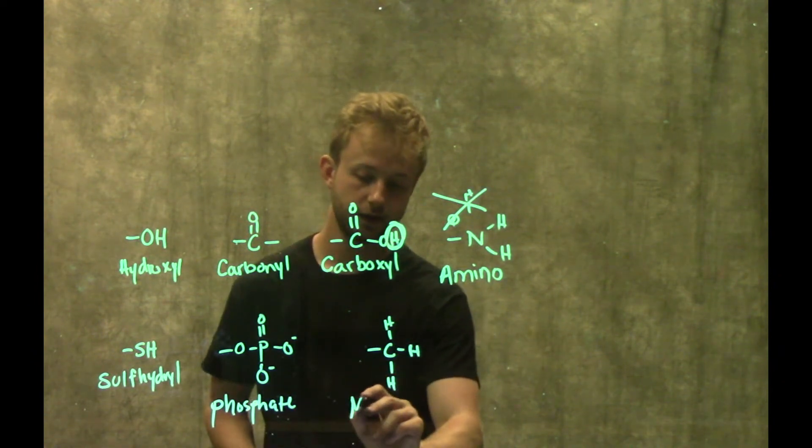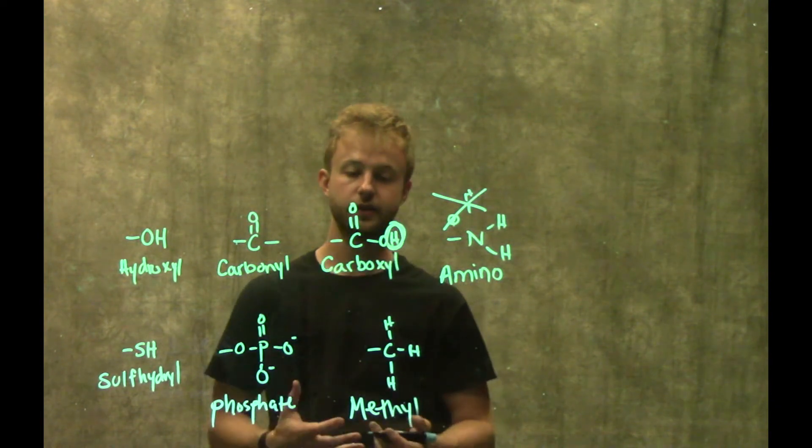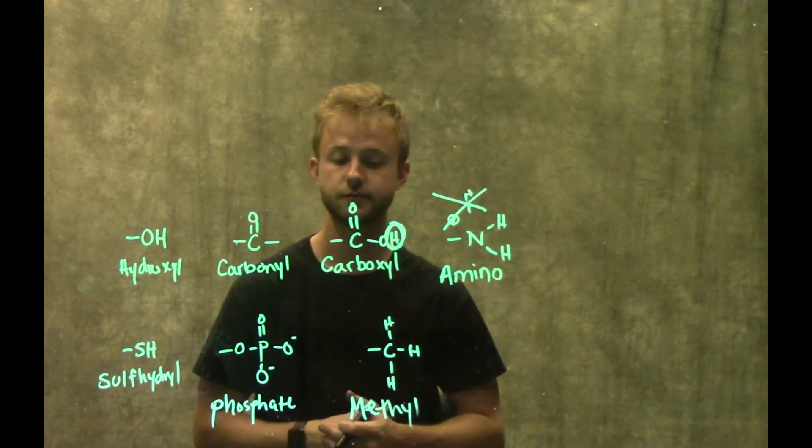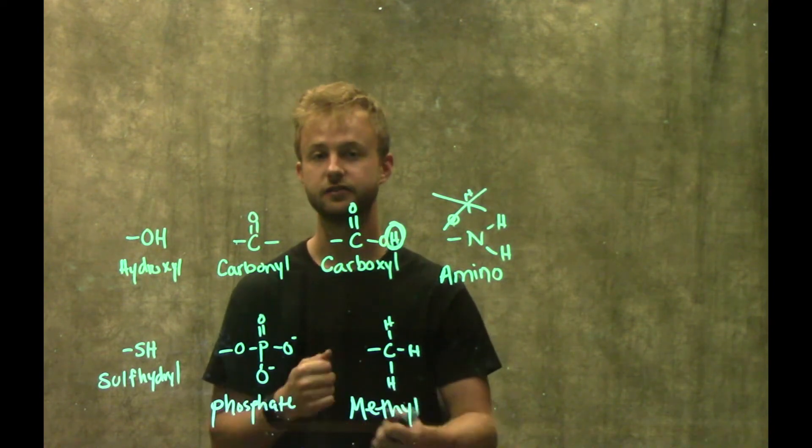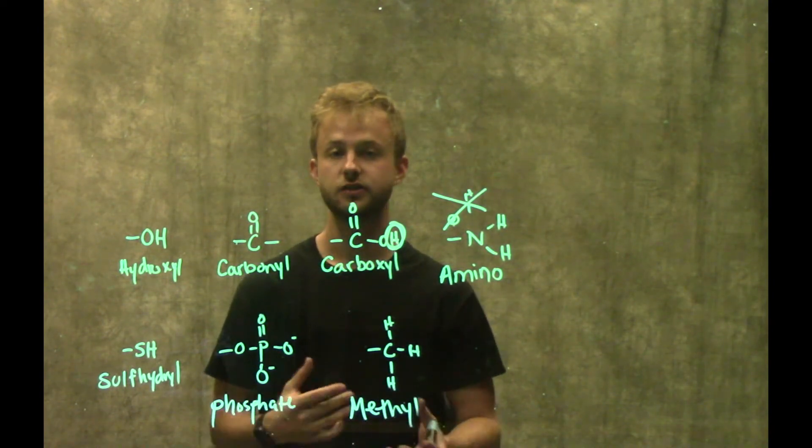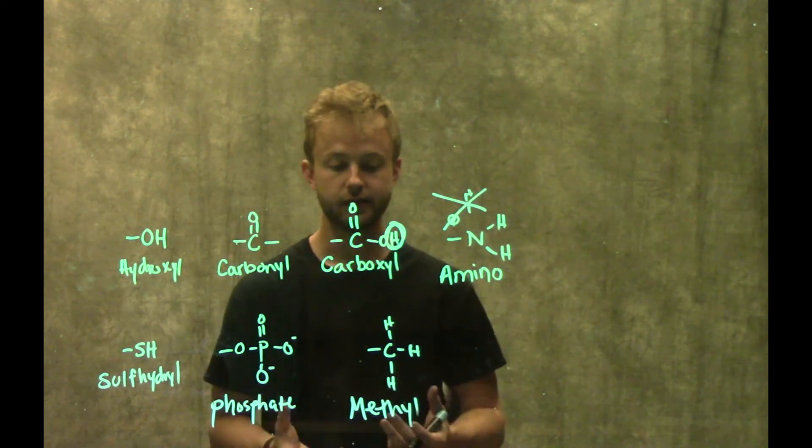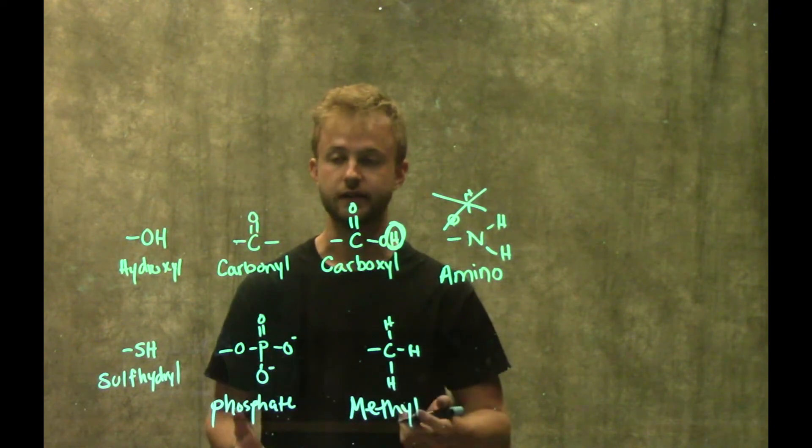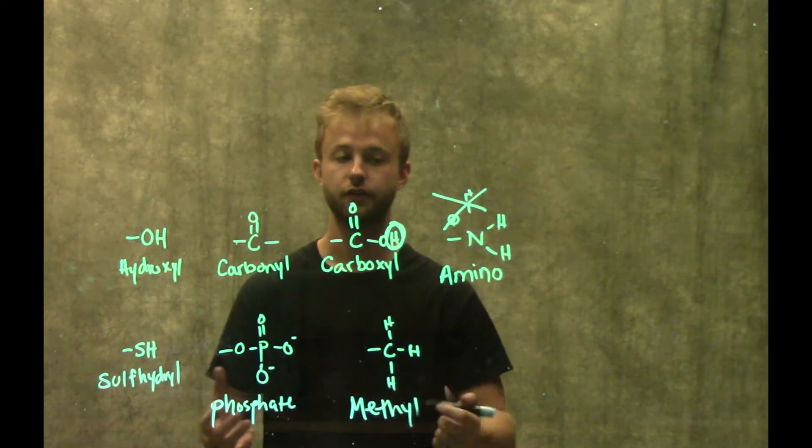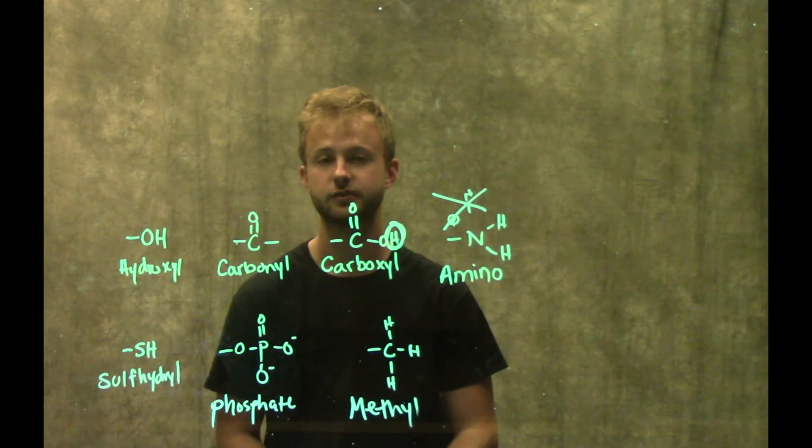This final group that we're going to look at is called a methyl group. The most important thing that methyl groups do in biological systems is they can get added to our DNA. That's going to change our pattern of gene expression. That's really the most important thing that methyl groups do in biology, but it's still important to have a good understanding of all these different functional groups for your current and future studies of biological systems.